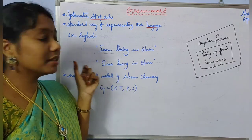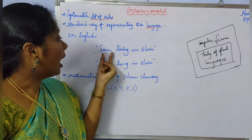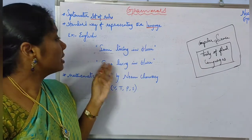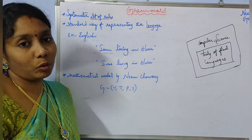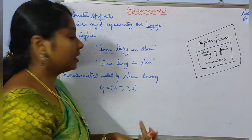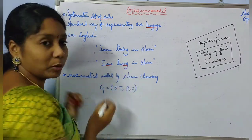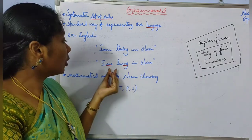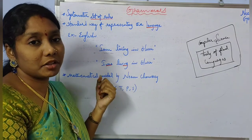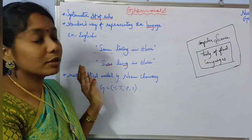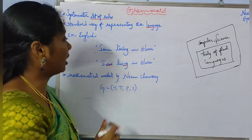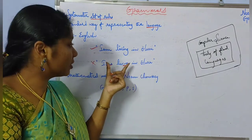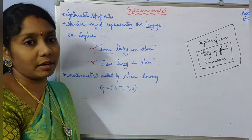Grammar rules, when followed, allow us to frame sentences. For example, consider the sentence: 'I am living in Eluru.' This is a sentence which conforms to the rules of English grammar. Now consider: 'I was living in Eluru' — wait, let's check if there is anything wrong with this second sentence. This is not a proper sentence because it is not following the rules given by the grammar of the English language.